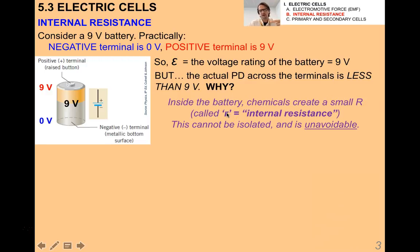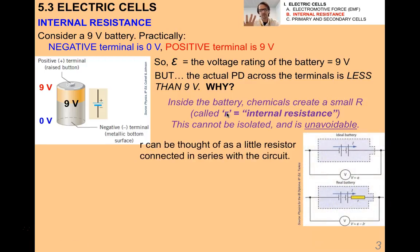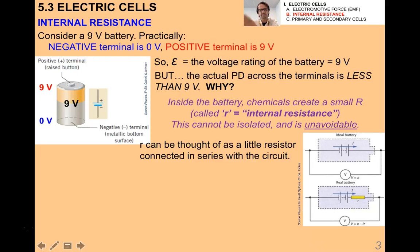Whenever you see lowercase r in an application of Ohm's law, it's going to be an internal resistance situation; uppercase R would be just a regular resistance like that of a resistor or any other component. You can think of internal resistance as a little resistor connected in series with the circuit. Up until now we've been neglecting internal resistance and treating the potential difference between the terminals as being the EMF, but now we're going to deal with it.